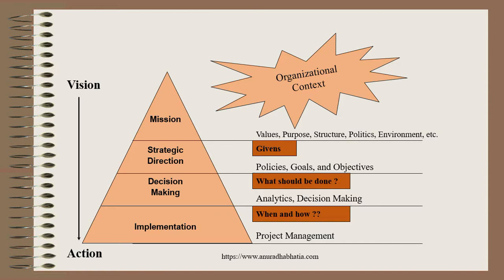When applying business intelligence using the past to find problem solutions, we need a vision and the actions which take place. On the organizational context, we have mission, strategic direction, decision making, and finally implementation. For the vision, we have mission, strategic planning, decision making, and implementation — so project management is very important. Policies, goals and objectives, values, purpose, structure, and environment all feed in. We start with our vision as mission; to reach that mission we have strategic direction and decision making, where analytical decisions from the past and present are taken and then the project is implemented. This is shown as a pyramid but is a continuously looping structure — it never stops.